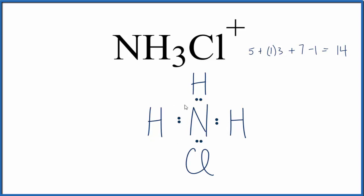So we have 6 more valence electrons, let's put those around the chlorine, and we've used all 14. And now the chlorine, that has an octet. So this is the Lewis structure for NH3Cl+.